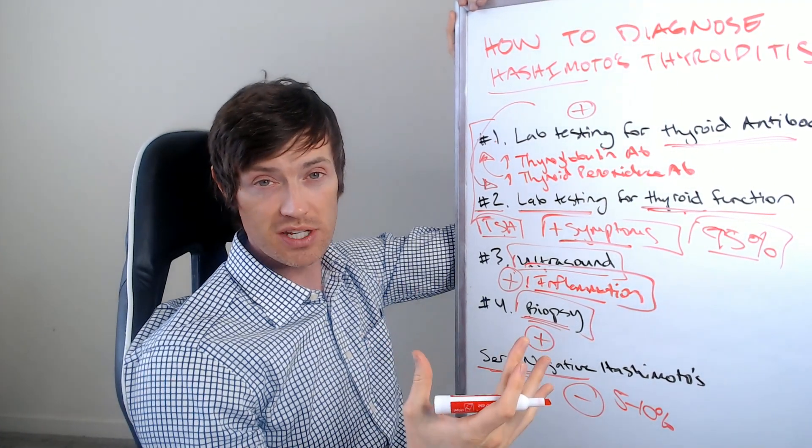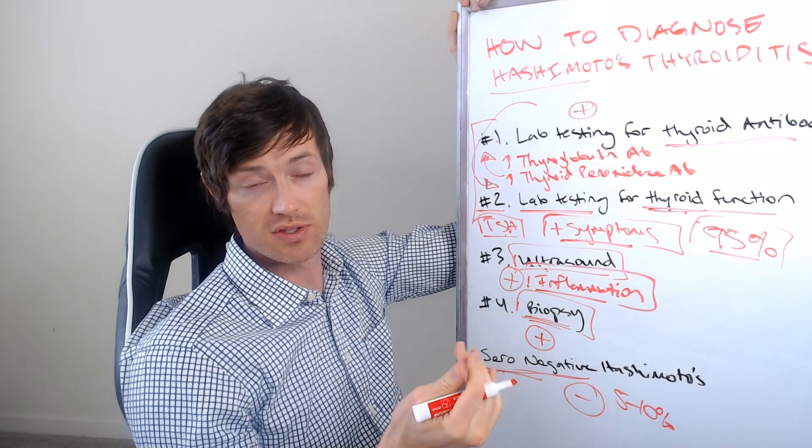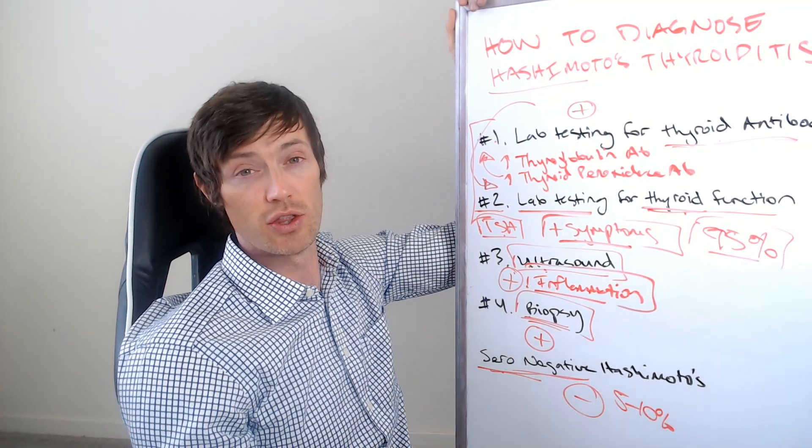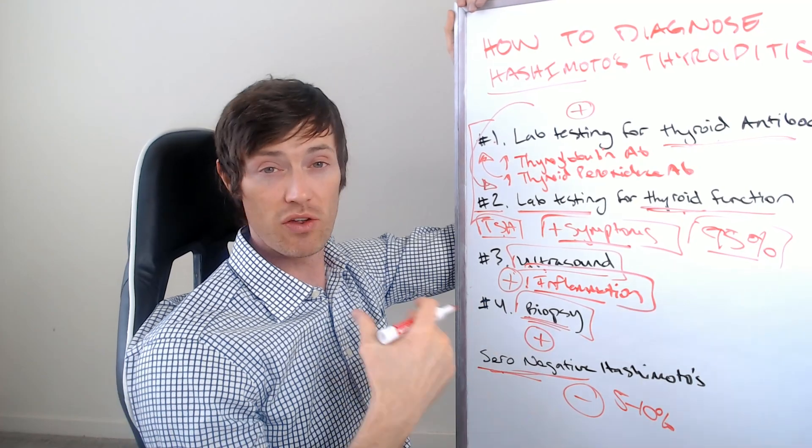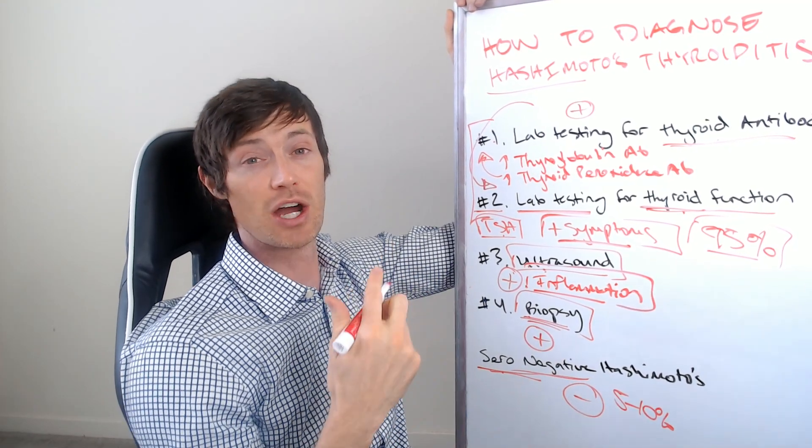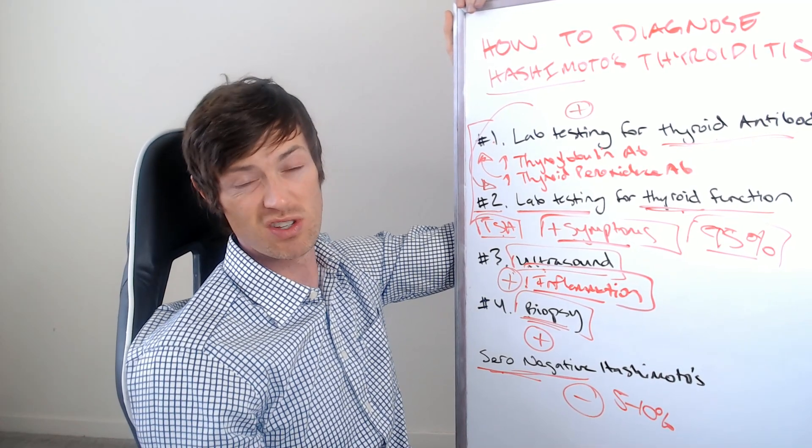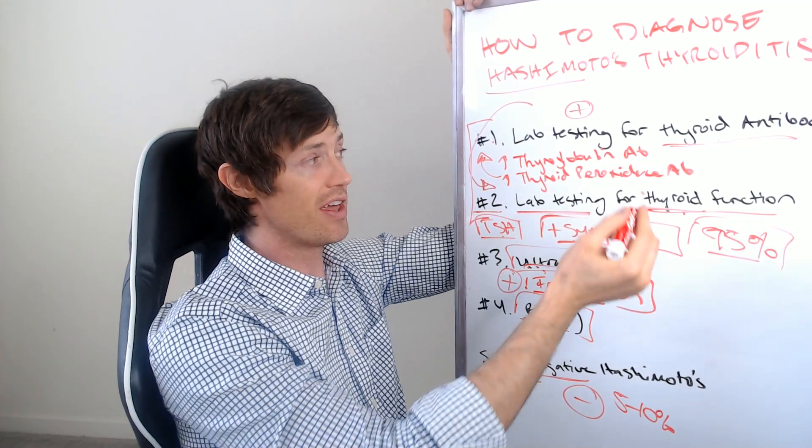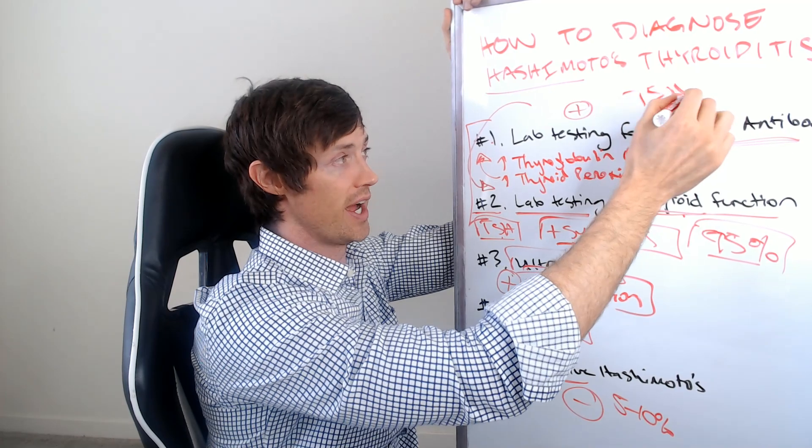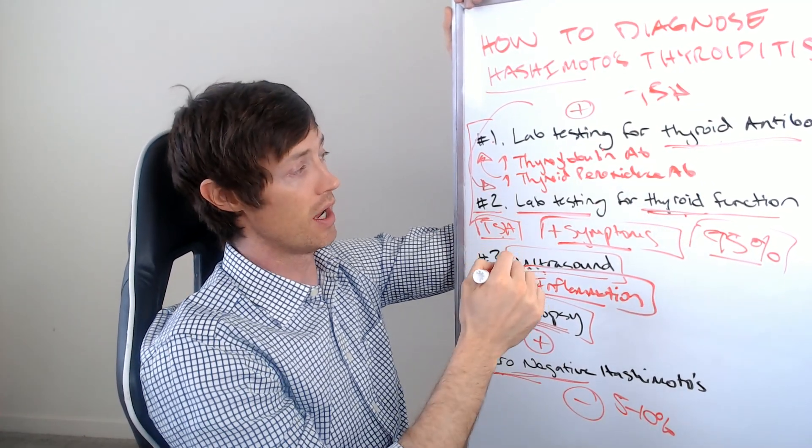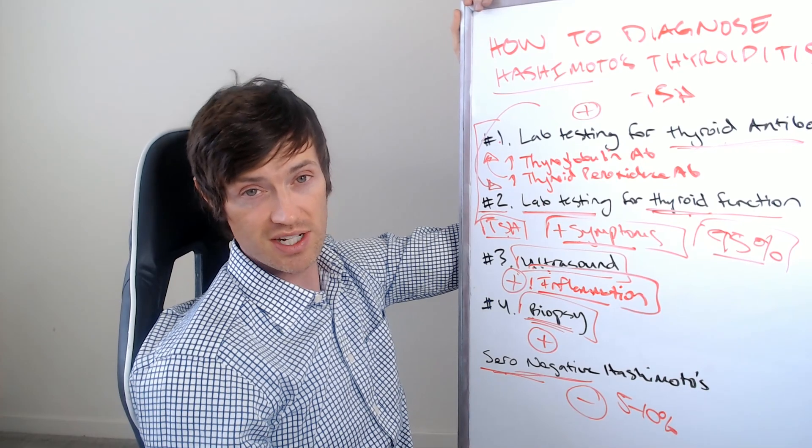Your doctor will probably tell you, well, it doesn't matter if you have Hashimoto's and it doesn't matter to them, but it does matter to you. The reason your doctor doesn't care is because whether or not you have Hashimoto's doesn't impact how your doctor is going to treat you. They're going to put you on thyroid medication no matter what. So they don't care if you have Hashimoto's, which is why they only ever ordered the TSH and they don't actually tend to check these thyroid antibodies, thyroid globulin antibody or thyroid peroxidase antibody.